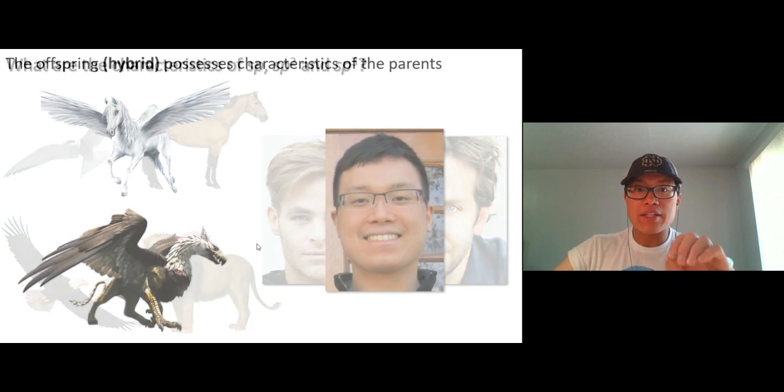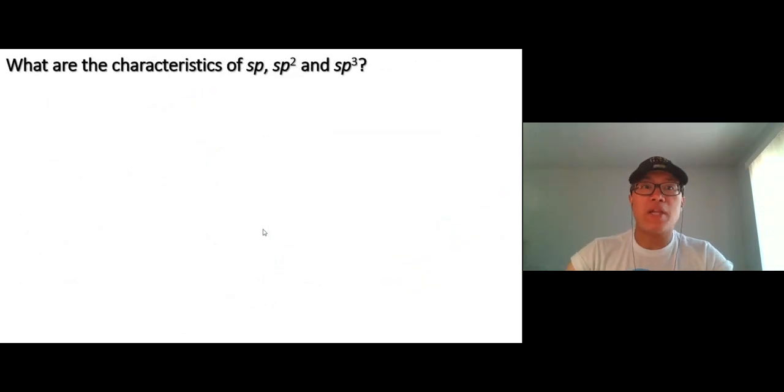And the offspring, the hybrid, looks similar to the parent. So here's the parent when we mix orbitals together, S and P orbital. Now here's some characteristics of the S and P orbital. S looks spherical, looks short and fat, that's a characteristic of an S orbital. Now for P orbital, P orbital is long and thin.